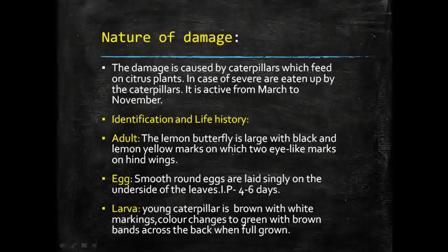The young caterpillar is brown in color with white markings, resembling bird droppings. As it grows and molts, its color changes to green with brown bands across the back when it is fully grown.